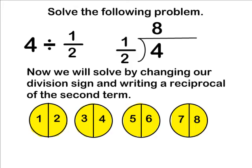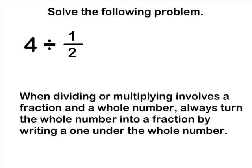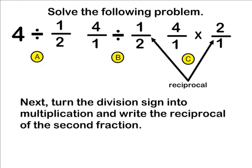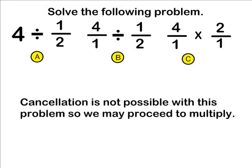Whenever multiplying or dividing a problem that involves one fraction and one whole number, you must turn that whole number into a fraction simply by writing the number 1 on the bottom of that whole number. In this example, we are going to take the number 4 and write the number 1 as a denominator. Whenever dividing two fractions together, you must take the division sign and turn it into a multiplication sign and write the reciprocal of the second term — the fraction after the division sign. In this case, that fraction is 1 half, and the reciprocal of 1 half is 2 over 1.